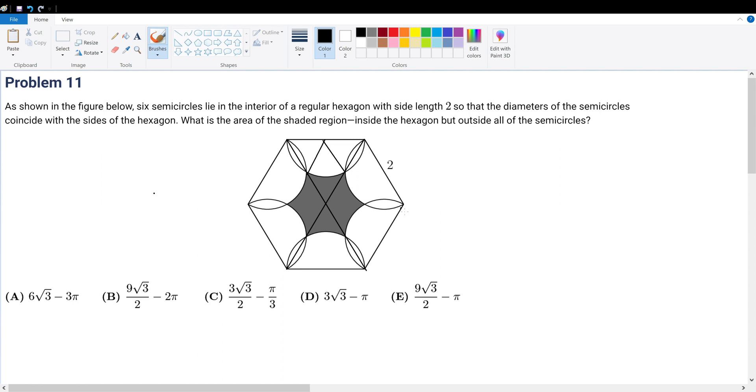So immediately when you think of hexagons, you should think of equilateral triangles. And when you have a semicircle, you can form, in this case, 3 of them, which is 1, 2, and 3.